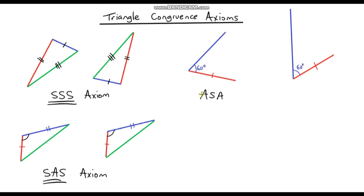So we've got our angles that are the same — that's the A. We've got our side lengths that are the same — that's the S. Now we have to construct two more angles that are the same, this time from the other side. I'm going to get my protractor back up and this time measure a 40-degree angle — it doesn't matter what the degrees are as long as they're the same for both. So that's about 40 degrees, and I'm just going to draw a line from here through to that point. We can see that we've constructed a triangle. I know that this angle here is 40 degrees.